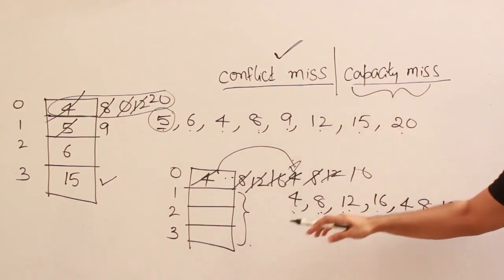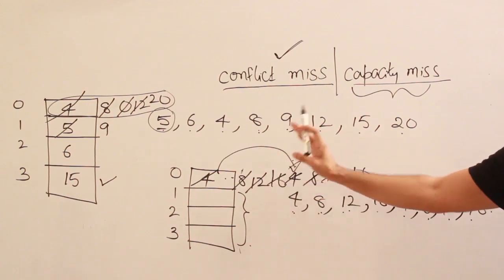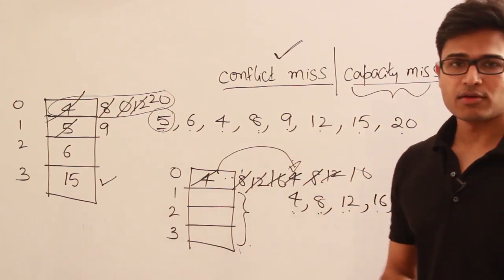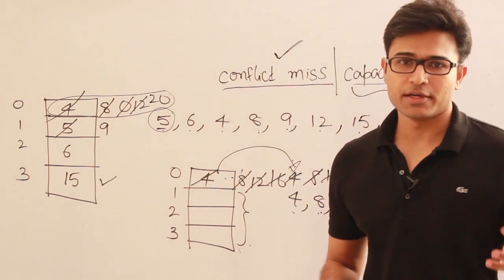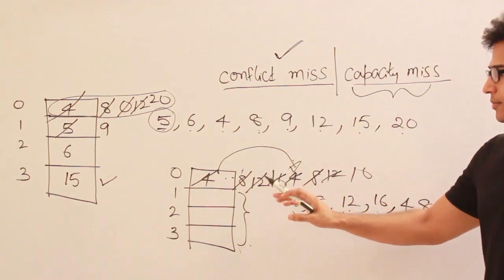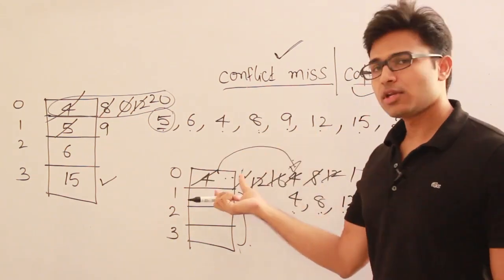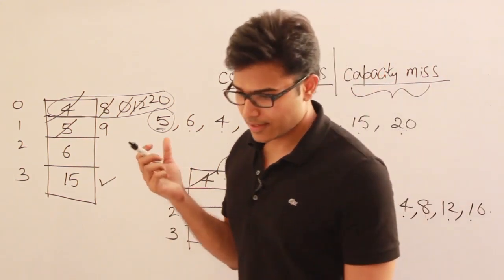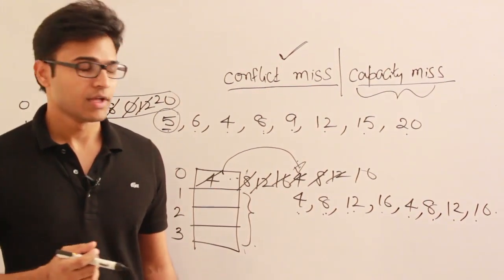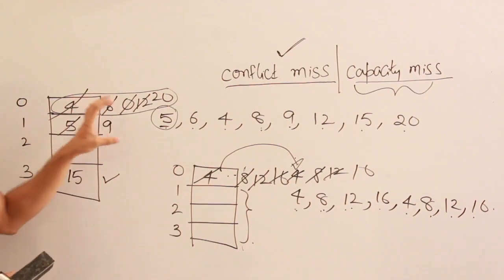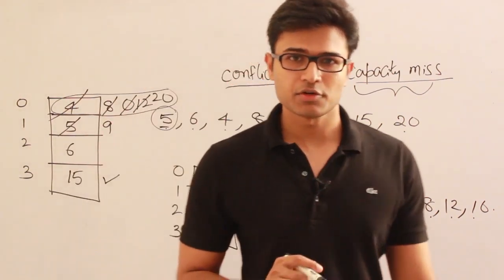Conflict miss is different from capacity miss. Capacity miss occurs when all lines are full and you replace a page that will be needed later — that replacement is unavoidable. But in a conflict miss, there is plenty of other space available yet you are forced to replace a useful block. To solve this problem, we remove the restriction that a block must map to only one cache line. If any block in main memory can go to any line in the cache, that is called associative mapping, which we shall see next.